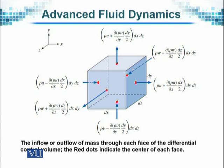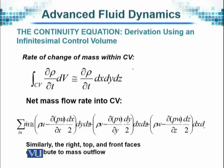The rate of change of mass within the control volume equals ∂ρ/∂t, approximately ∂ρ/∂t times dx dy dz. The volume dV is represented by dx times dy times dz. ρ times volume gives the mass, and similarly, the net flow rate equals these quantities, represented as ṁ.